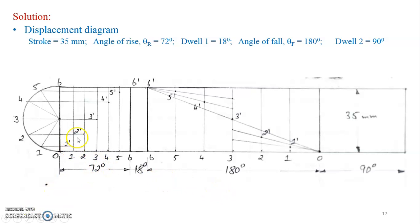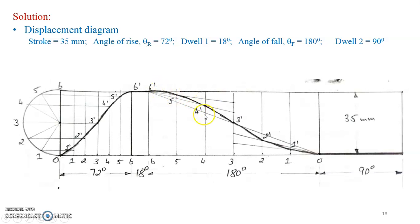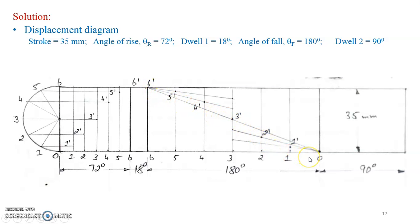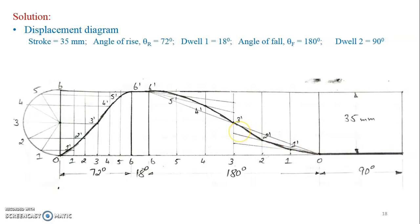For the angle of rise following simple harmonic motion, draw a semicircle and divide it into 6 equal parts to get points 1′, 2′, 3′, 4′, 5′. For the angle of fall following UARM, locate the central line and divide it into 6 equal parts — 35 ÷ 6 ≈ 5.8 mm each. You need to be precise, not necessarily accurate. From the top, add the lines and get points 6′, 5′, 4′, 3′, 2′, 1′, 0. Complete the displacement diagram.